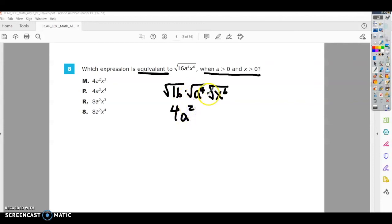And then same thing here. The index is 2, so 2 into 6 is x to the 3rd. And we look over here, and we can see that is the correct answer.